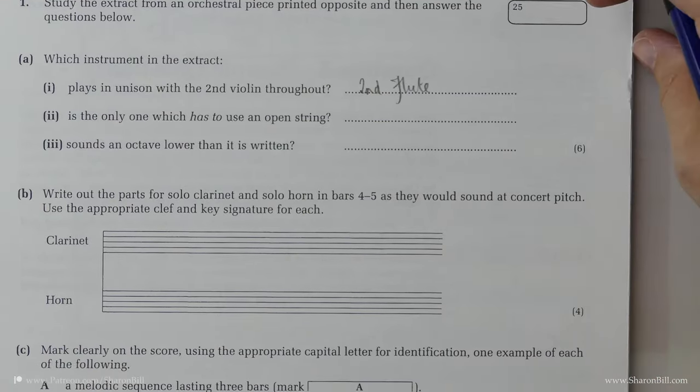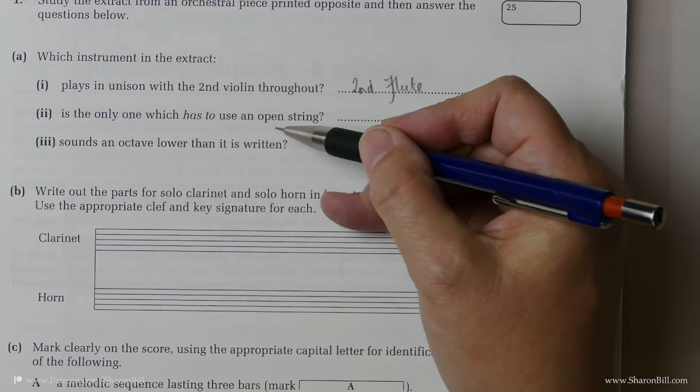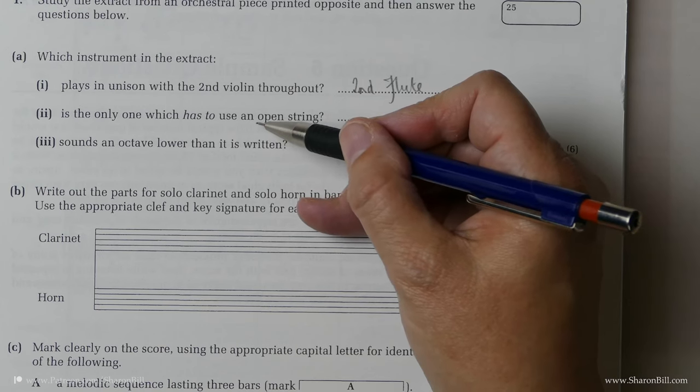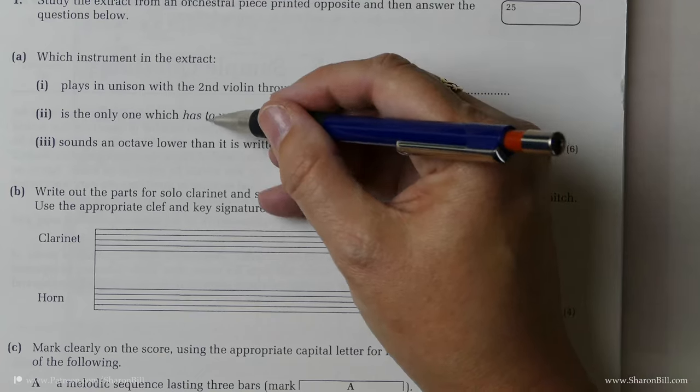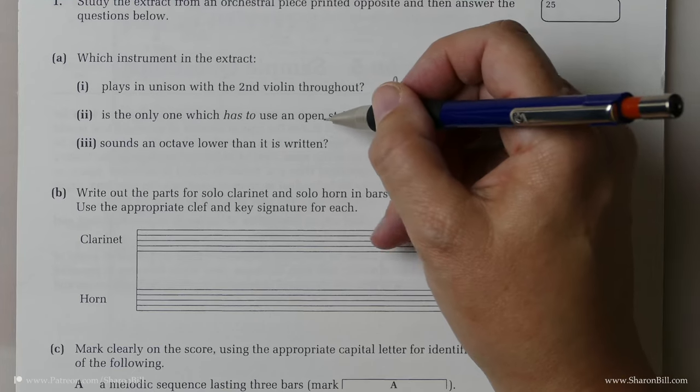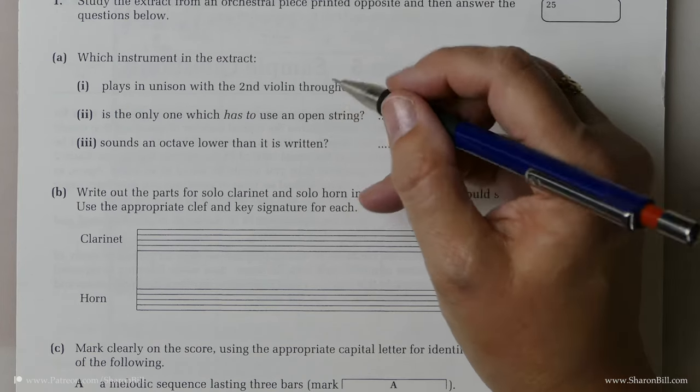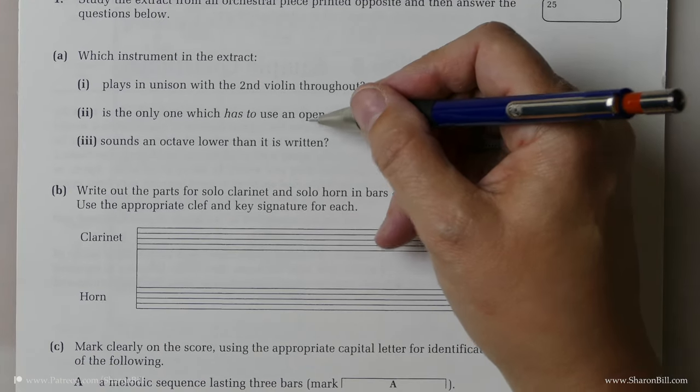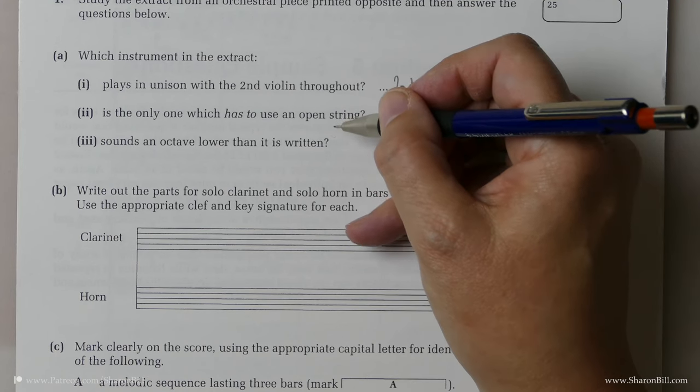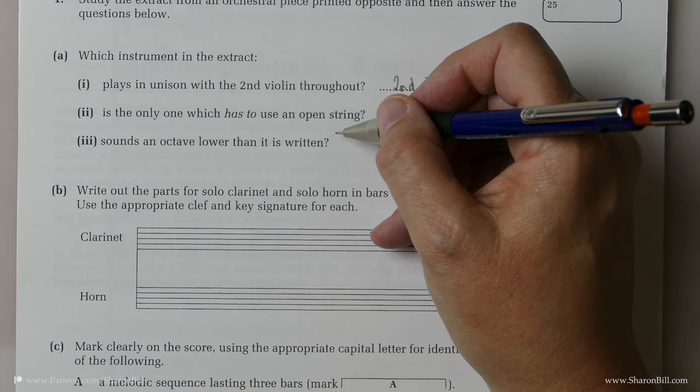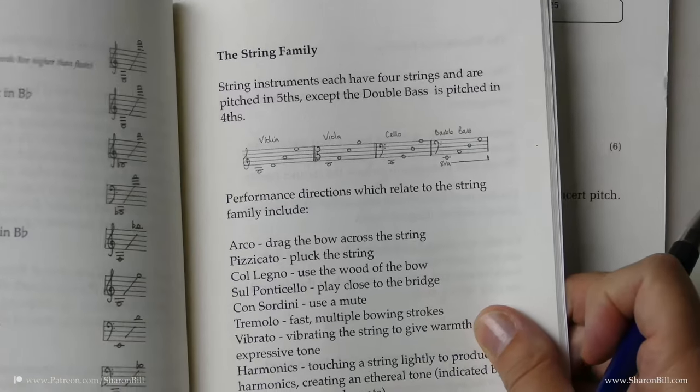Now, a little bit more thinking is required here because we're asked which instrument has to use the open string. There's only one and it has to use the open string. And so before we can answer that, we need to know what strings are being used because a string player will only use an open string when there is no other alternative. Usually you would use a string that is stopped to create the pitch, with your finger pressing on the string. However, it will use an open string if there is no other alternative and the reason that would be is because it's the lowest note, and if you stop it, that raises the pitch and it needs to be that lowest possible pitch.